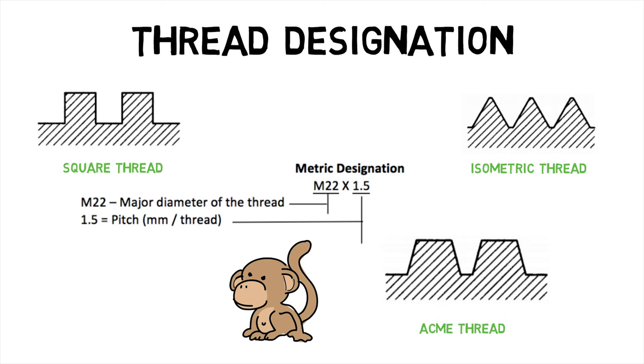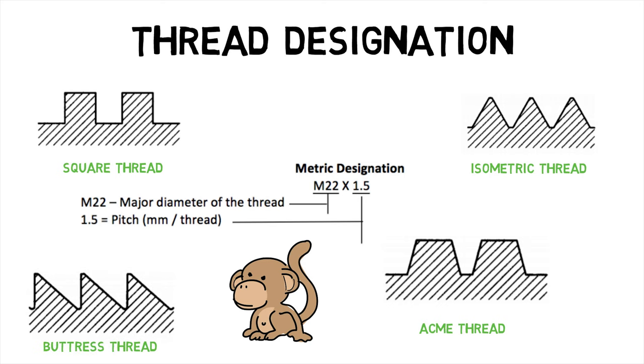Third, ACME thread, which is stronger than square thread; and finally buttress thread, which is designed to handle heavy forces in a single direction.